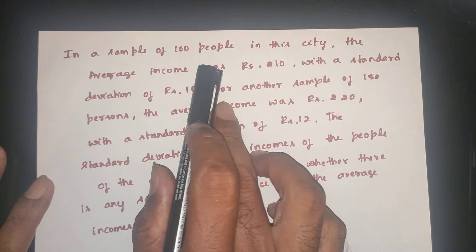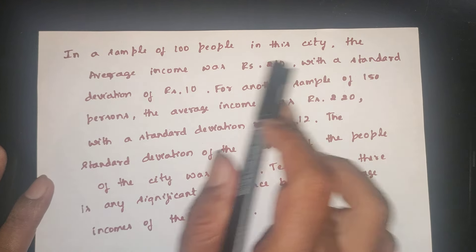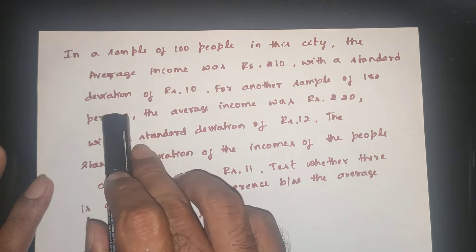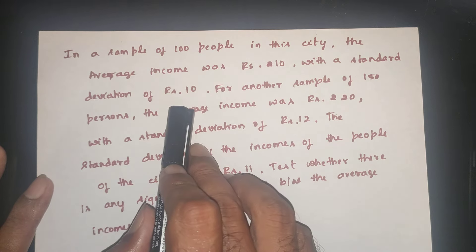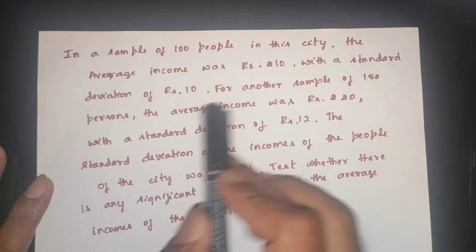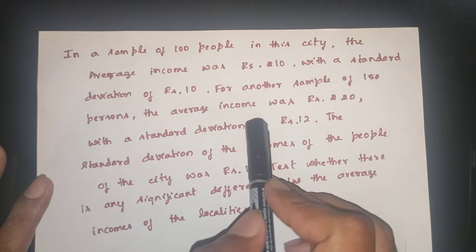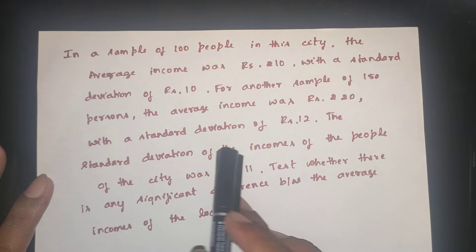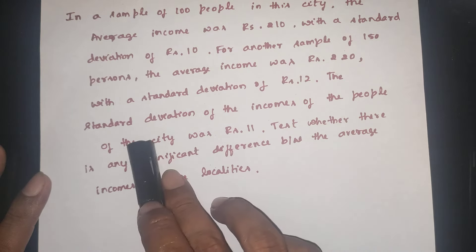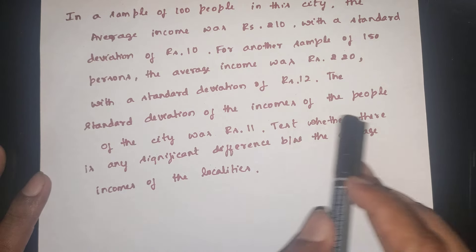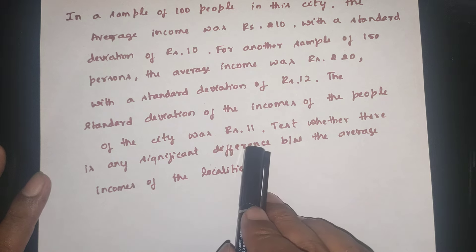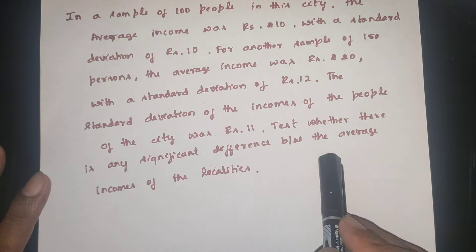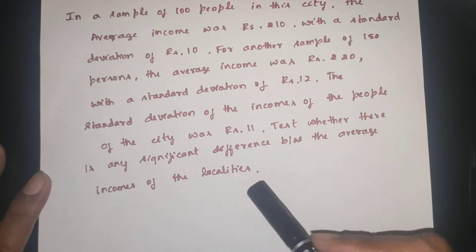In a sample of 100 people in this city, the average income was Rs. 210 with a standard deviation of Rs. 10. For another sample of 150 people, the average income was Rs. 220 with a standard deviation of Rs. 12. The standard deviation of the income of the people of the city was Rs. 11. Test whether there is any significant difference between the average income of the localities.